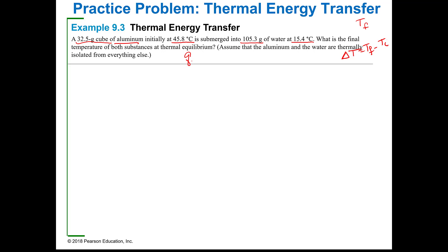We know that the Q of the aluminum equals the negative Q of the water. So, mass of aluminum times C sub S of aluminum times delta T of aluminum equals the mass of the water times C sub S of the water times delta T of the water. I'm going to write my inventory down so I don't get them mixed up. The mass of the aluminum is 32.5 grams.